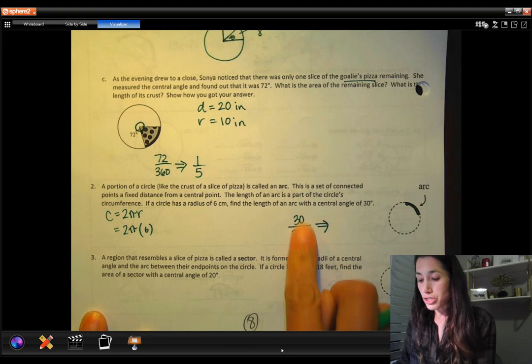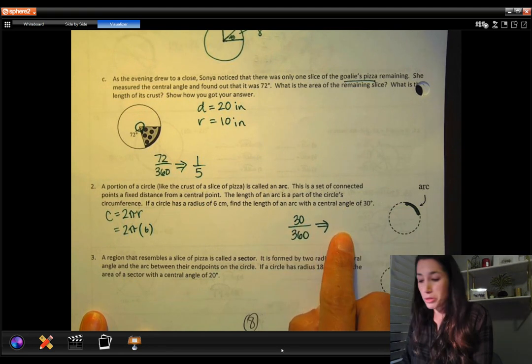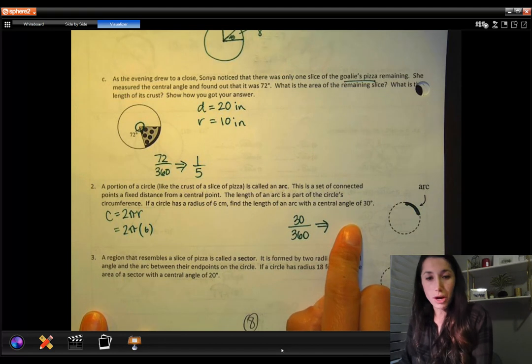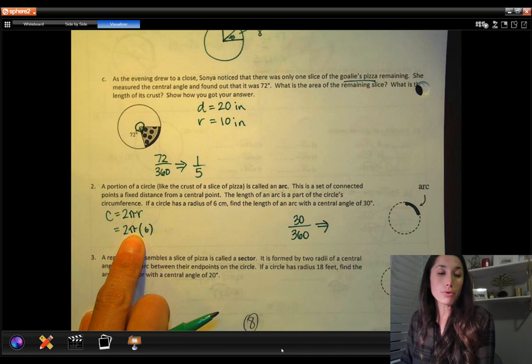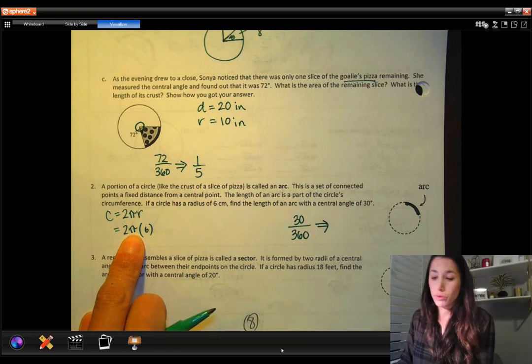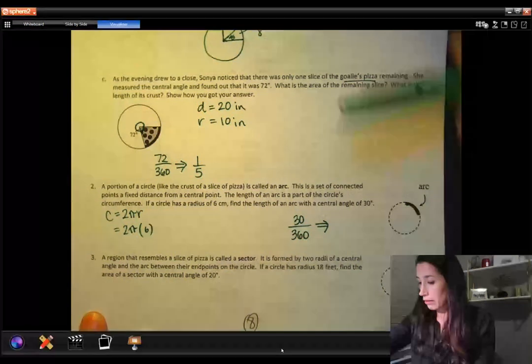So I can either make this into a decimal. I can make that into a fraction. And then all I have to do is multiply this decimal or fraction, however I want to write it, I have to multiply it by this total circumference of the circle. So multiply it by the 12π.